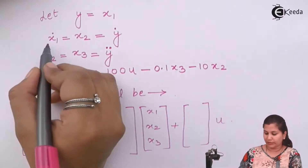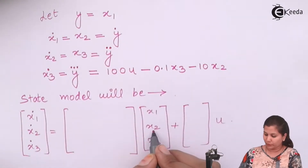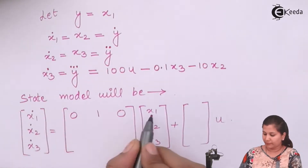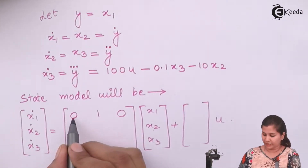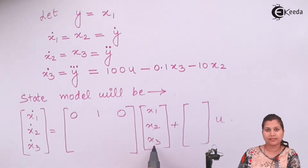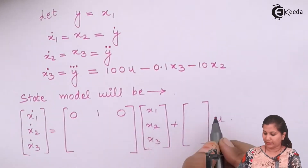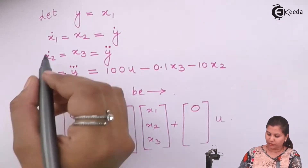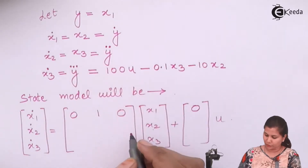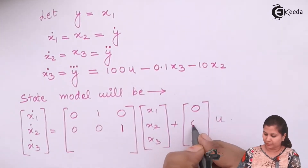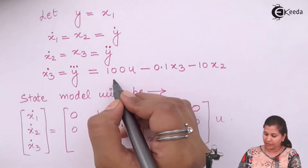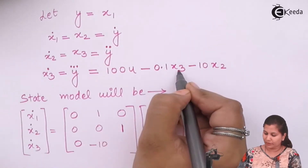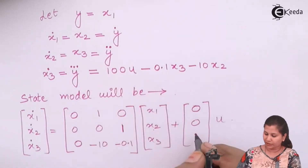Now the state model in matrix form: for X1 dot = X2, the row is [0, 1, 0] since only X2 is involved and U is not present, so its coefficient is 0. For X2 dot = X3, only X3 is present so the row is [0, 0, 1]. For X3 dot, X1 is not involved so it is 0, X2 coefficient is −10, X3 coefficient is −0.1, and U coefficient is 100.